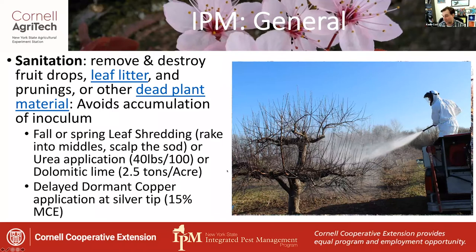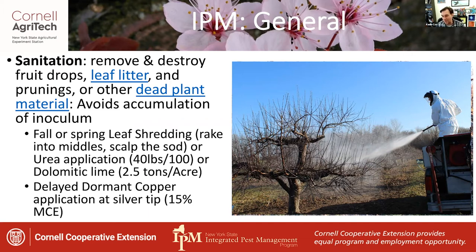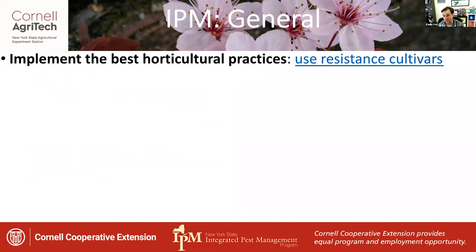You can follow this up with a delayed dormant application of copper at silver tip. It works on fire blight if any cankers are oozing, it burns out any overwintering conidia or other structures, and protects against those early infections from things like apple scab and all the other ascomycetes, including powdery mildew and bitter rot that might be hiding inside nooks and crannies on tissues. It gets a lot of things really clean before you go into the season.